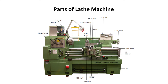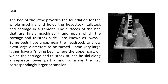Now we will study different parts of lathe machine. The bed of the lathe provides the foundation for the whole machine and holds the headstock, tailstock and carriage in alignment. The surfaces of the bed that are finely machined, and upon which the carriage and tailstock slide, are known as ways.